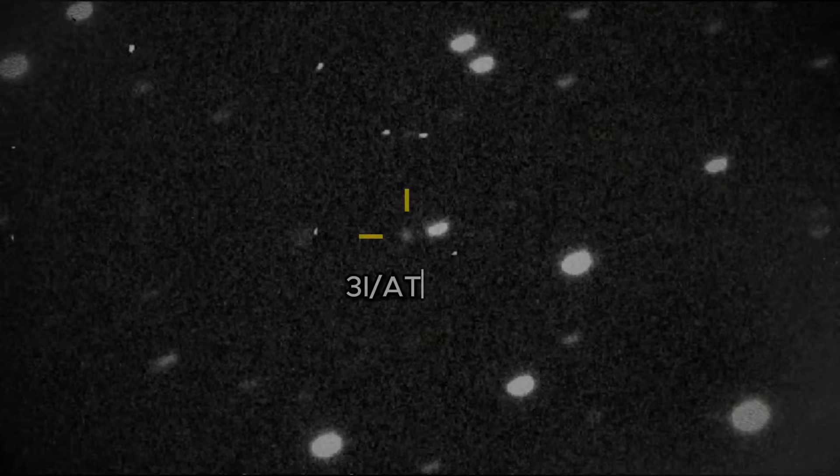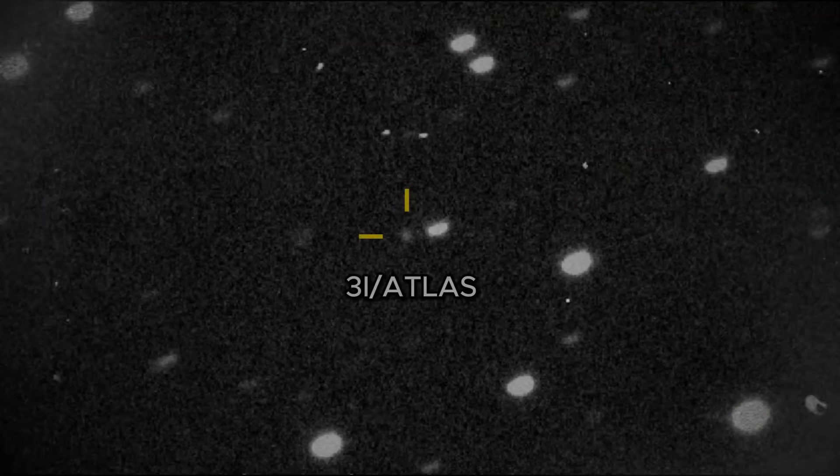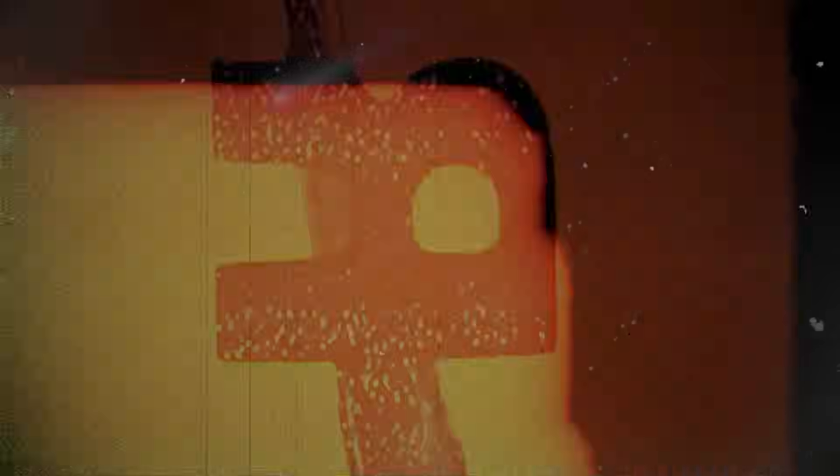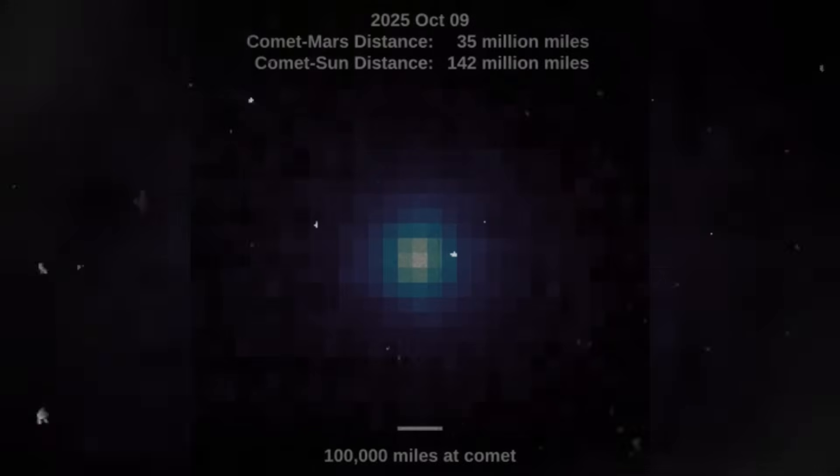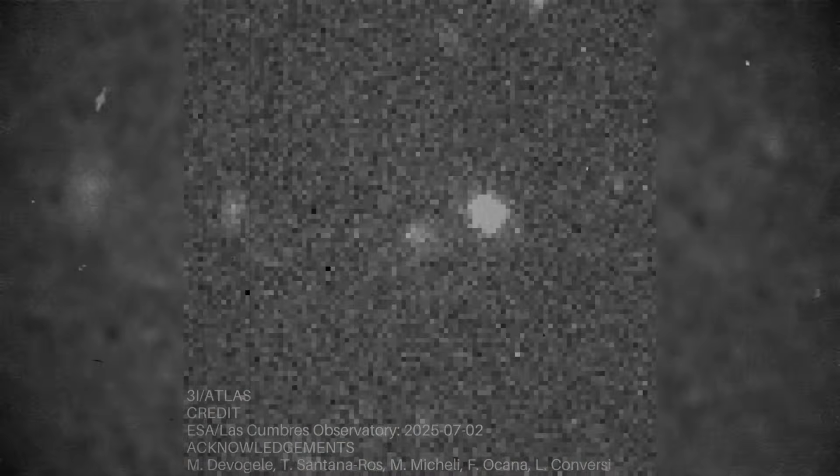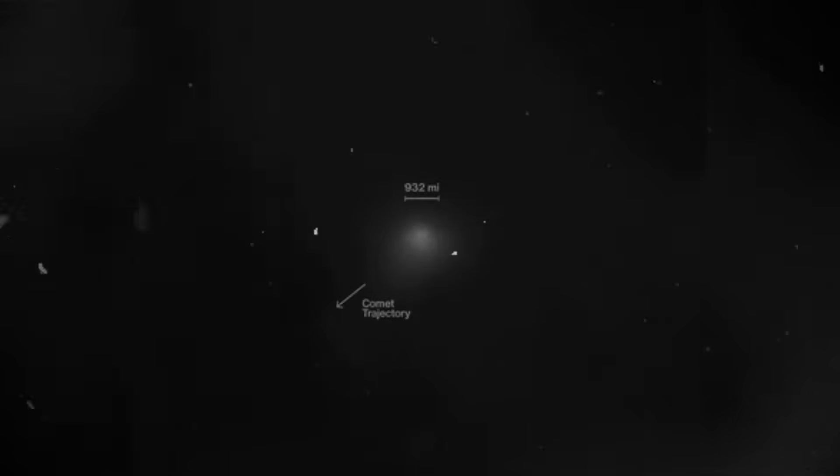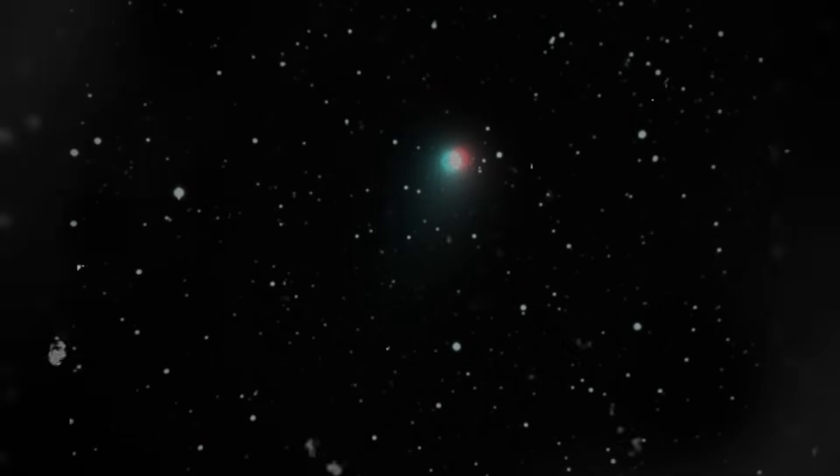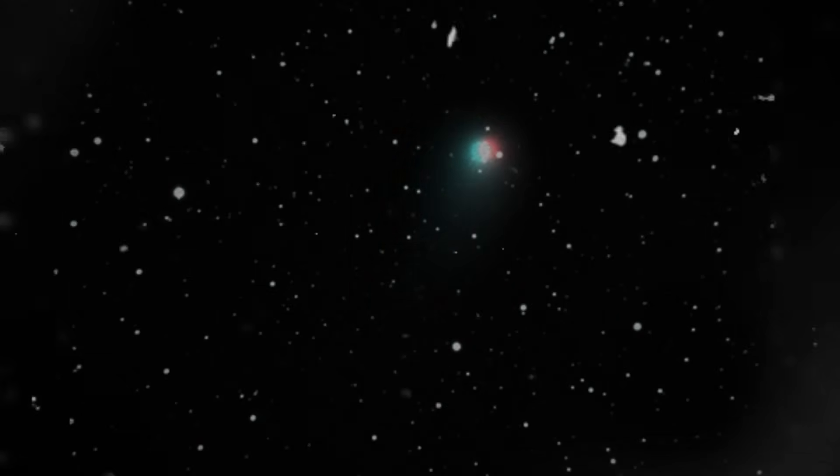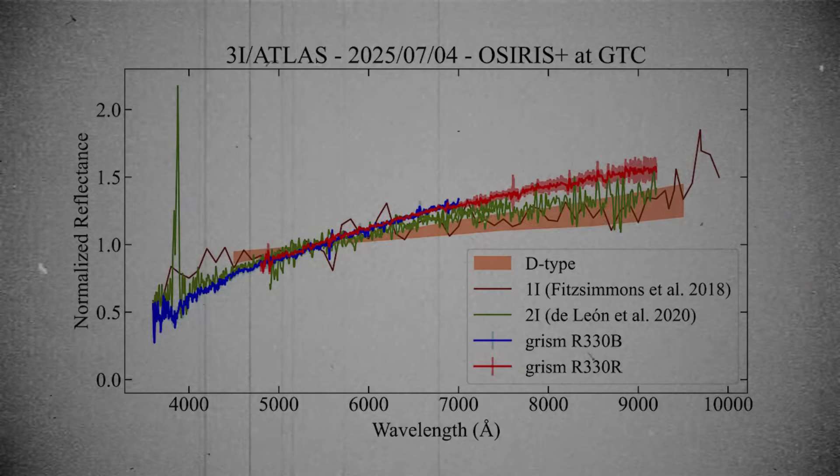What makes these frames so important is not just their resolution, but the consistency between different telescopes. Even when taken from different hemispheres and under different atmospheric conditions, the central structure of Atlas remains unchanged in shape, density, and reflectivity. This level of stability is unusual for any comet moving through such an active region of space, especially one that has already endured a close encounter with significant solar radiation.